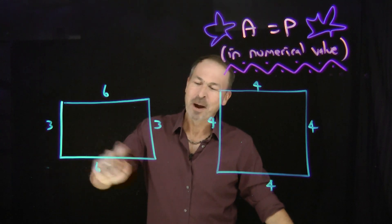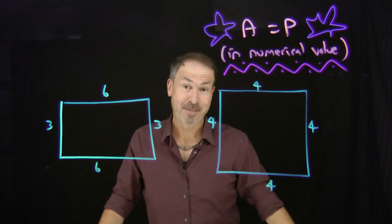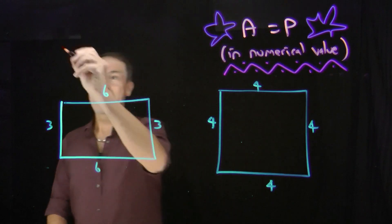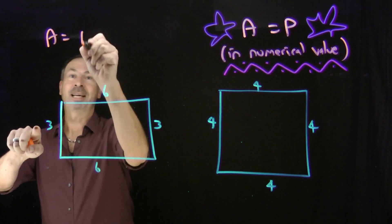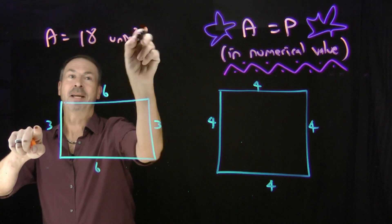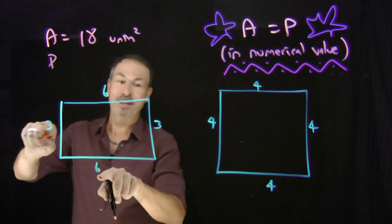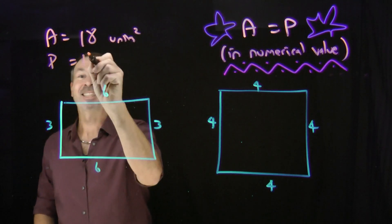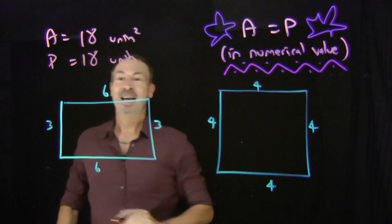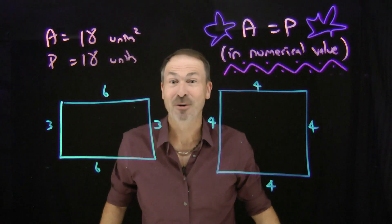G'day. The 3×6 rectangle has a curious mathematical property. If you work out its area, it would be 3 times 6, 18 units squared. If you work out its perimeter, that would be 3 plus 6 plus 3 plus 6, that's 18 units. The area and the perimeter have the same numerical value.